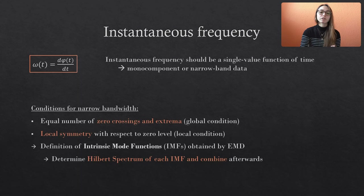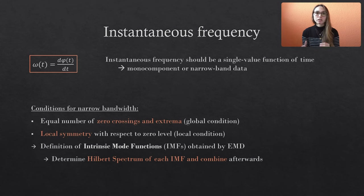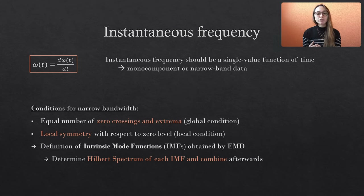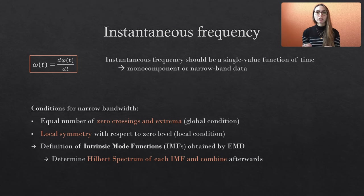It is difficult to find a clear definition of the narrowband property, but there is some consensus involving a global and local requirement. The global condition states that the data must have an equal number of extrema and zero crossings, while a local symmetry to the zero level must additionally exist. Both conditions are involved in the definition of the intrinsic mode functions obtained by an EMD — so the EMD is the ideal method to preprocess the data and decompose it into components that fulfill the requirements to calculate meaningful instantaneous frequencies. We apply the Hilbert transform to each mode, determine the instantaneous energy and frequency, and combine the quantities of all modes into a single Hilbert spectrum.